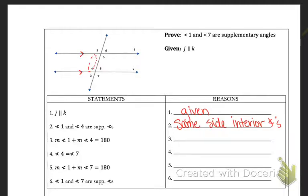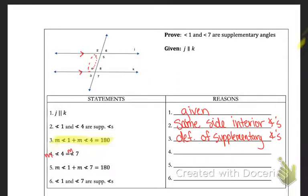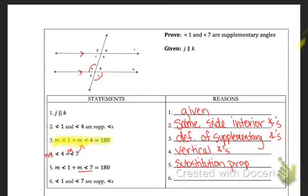The next statement: if I add the measures of those two angles I get 180 degrees, and the reason we know that is because the prior statement says they're supplementary — that's just the definition of supplementary. Then, angle 4 is equal to angle 7. The measure of angle 4 equals the measure of angle 7 because those are vertical angles. Since they're equal, we can replace the measure of angle 4 with the measure of angle 7 — that's just the substitution property.